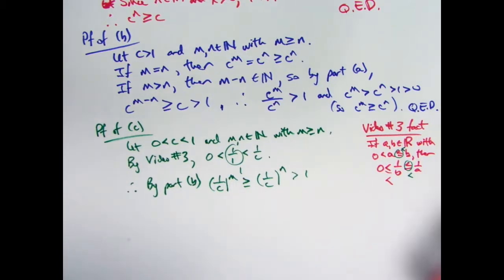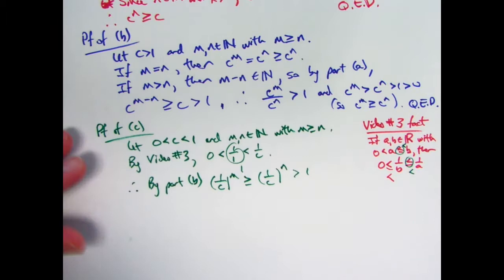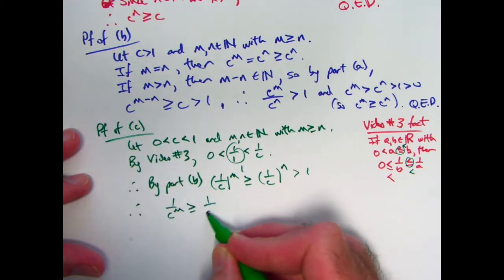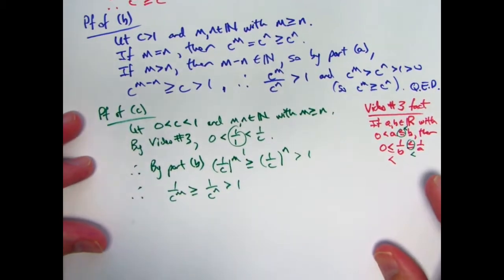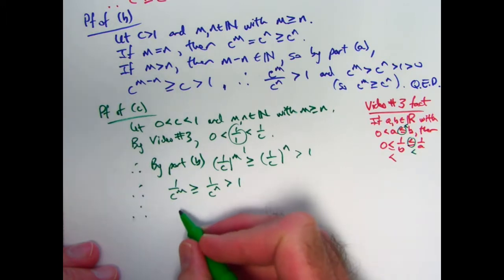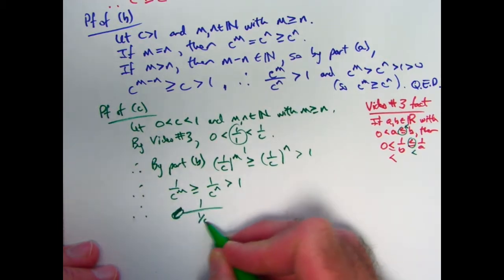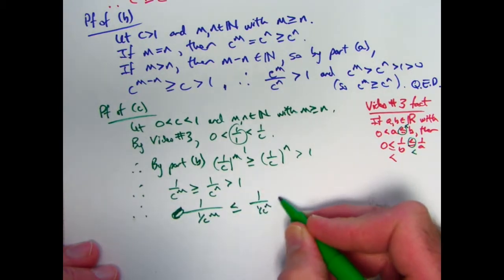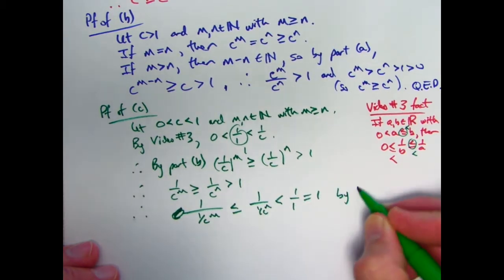I'm assuming you know how to raise fractions to powers, and 1 to any power is 1. Therefore, 1/c^m is greater than or equal to 1/c^n, which is bigger than 1. And now I should use video 3 fact again. I should take reciprocals here and switch the direction of the inequalities. Let's go ahead and do that. Therefore, I could write 1 over 1 over c^m is less than or equal to 1 over 1 over c^n is less than 1 over 1, which is 1 by video number 3.